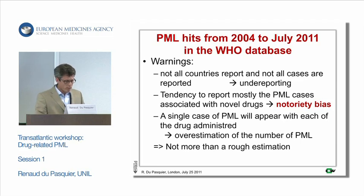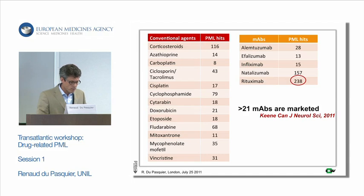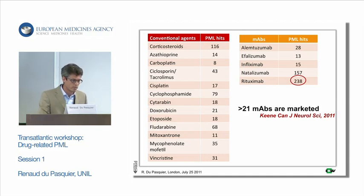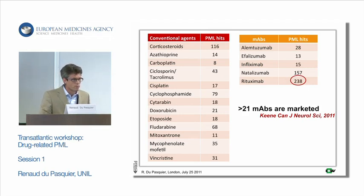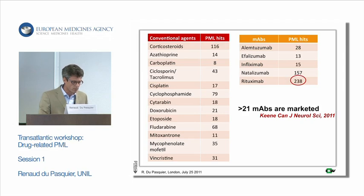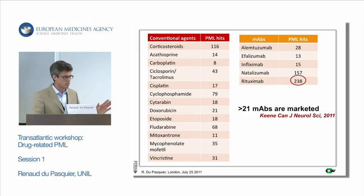So it's really only a rough estimation. With all these warnings, here is the list of PML cases between 2004 and 2011 — and these are only conventional agents. We must not forget that corticosteroids can be associated with PML. Cyclophosphamide has quite high numbers, as does fludarabine. But once again, don't take it as a pure incidence per drug.